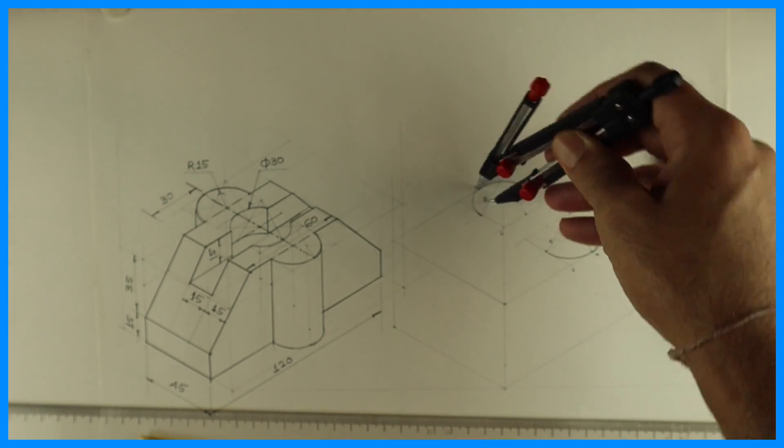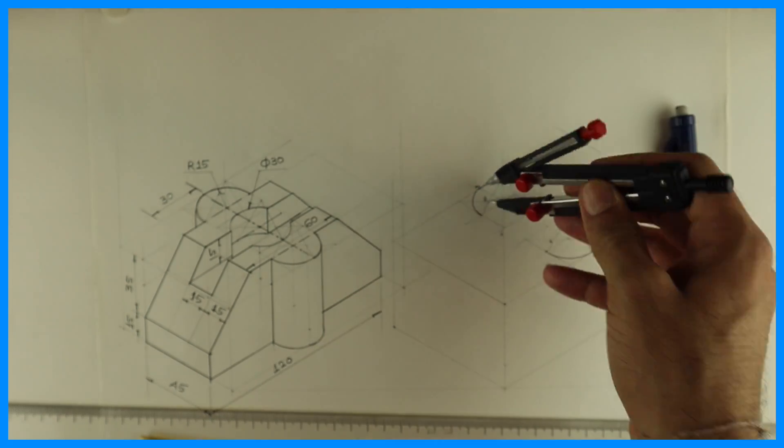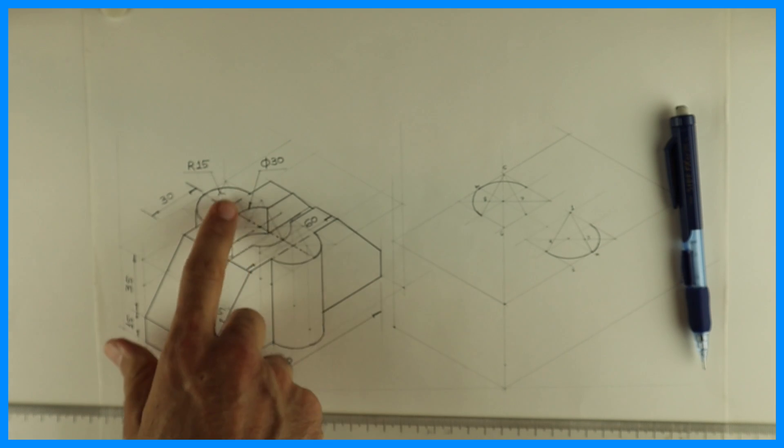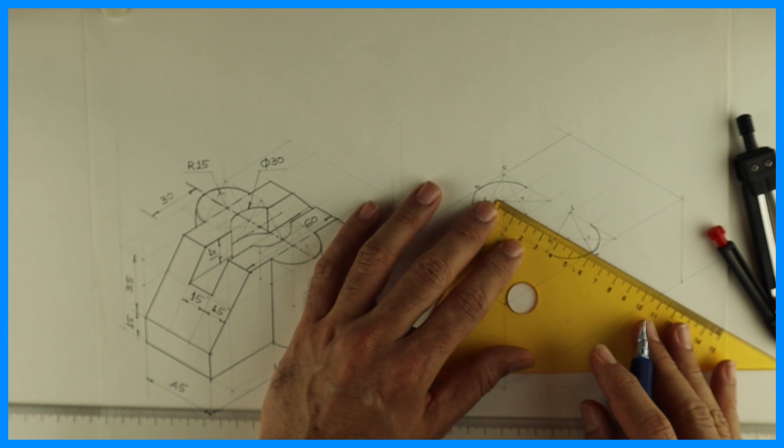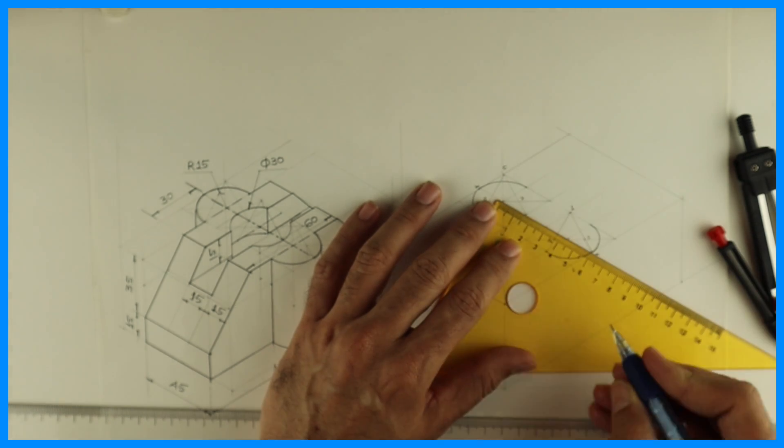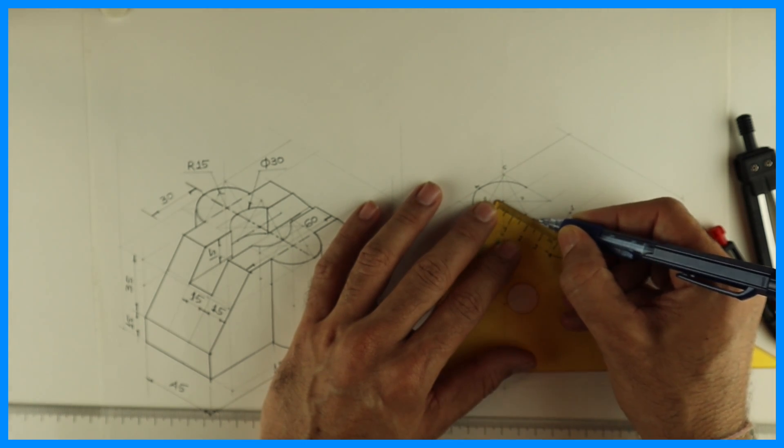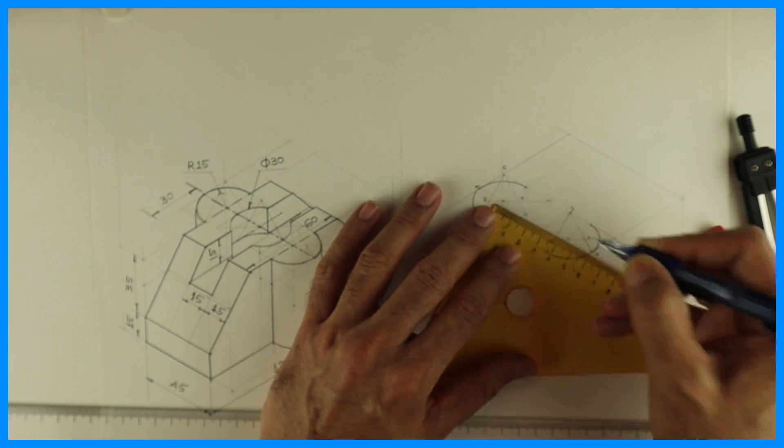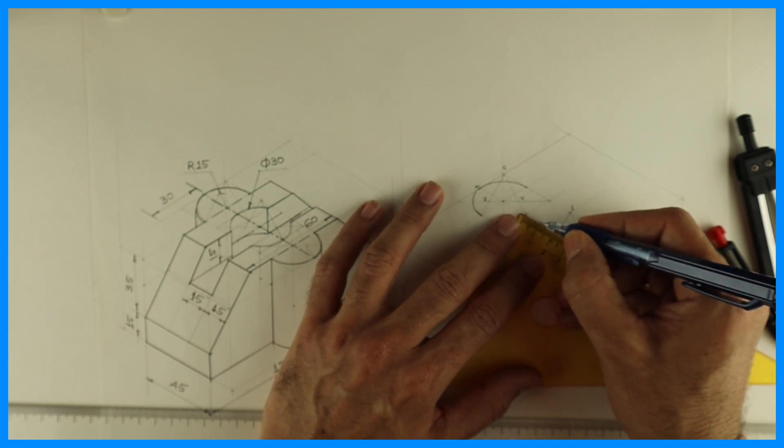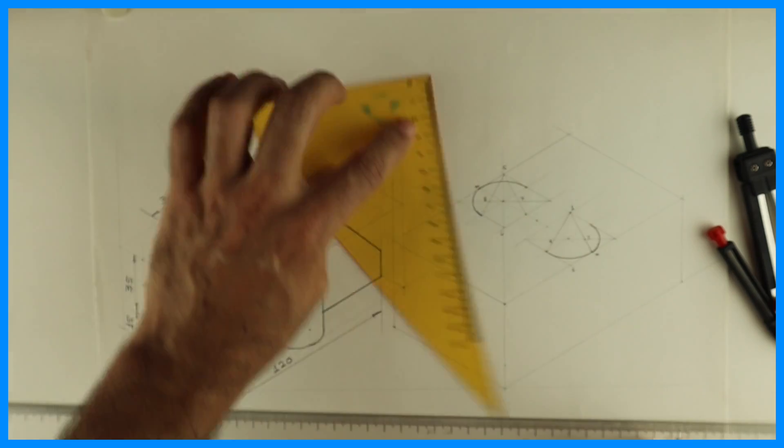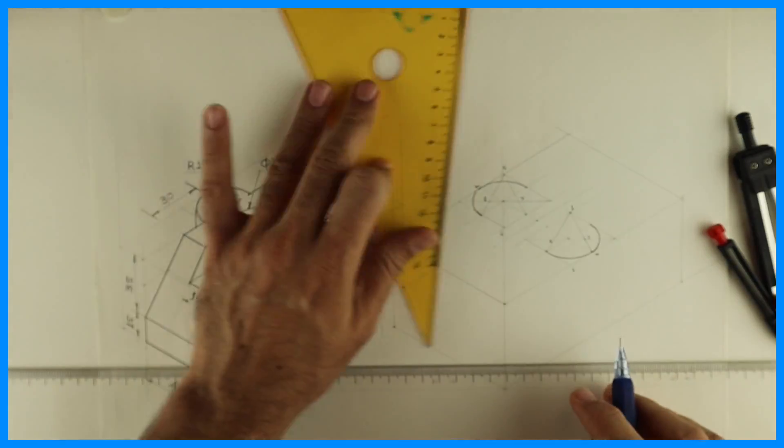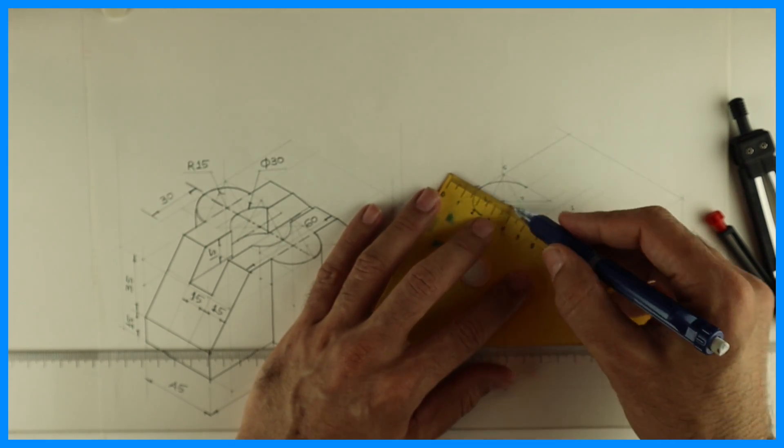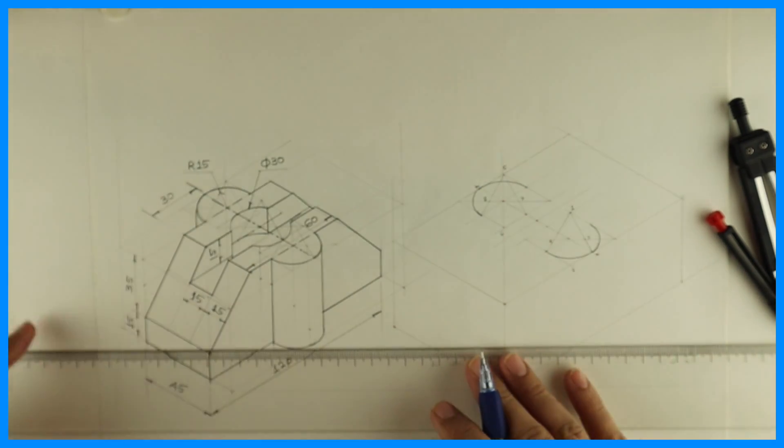Now to draw one more circle which is at the center, we will find out the midpoint of 75 and we can draw a line. From center again we can draw 15, 15, 15, 15.